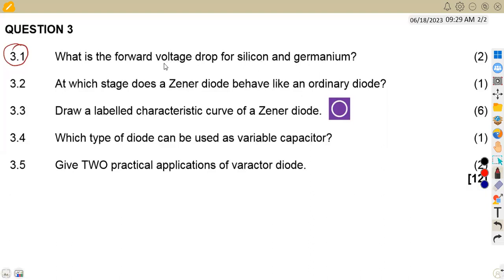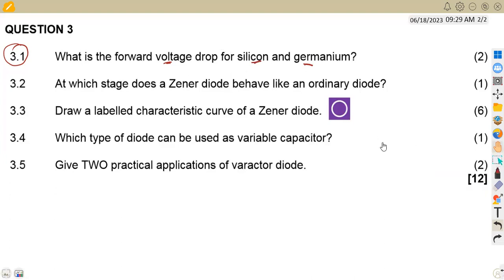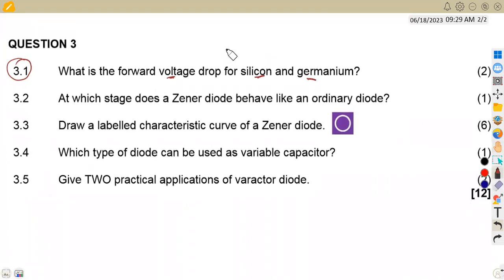What is the forward voltage drop for silicon and germanium? Take note we are talking about the forward voltage drop for a silicon and a germanium PN junction diode. If we are dealing with silicon it is approximated at 0.6 volts according to our syllabus, some use 0.7.